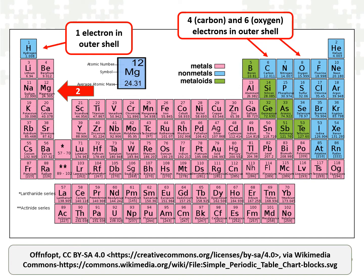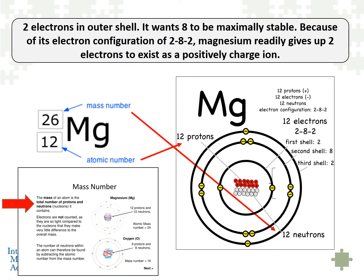Elements on the right side are closer to the noble gases, which have the optimal stable outer orbital — what's called the valence orbital — of eight electrons. With regards to magnesium, it actually has two electrons in its outer shell. It wants eight to be maximally stable, but because of its electron configuration — what's called 2A2 — it readily gives up its valence or outer shell electrons easily to carry a positive charge. It gives up two negative electrons and therefore carries a positive charge.